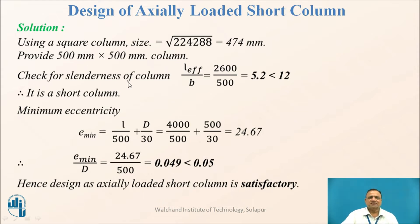Now let us check the slenderness ratio. It is L_effective divided by B, which works out to 5.2, which is less than 12. Therefore, it is a short column.